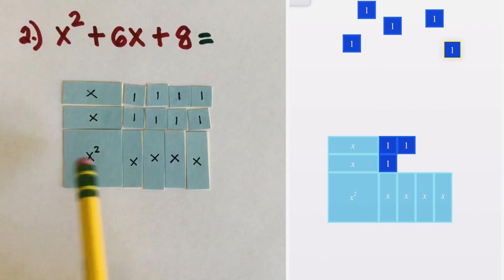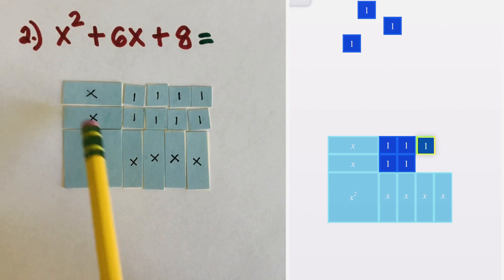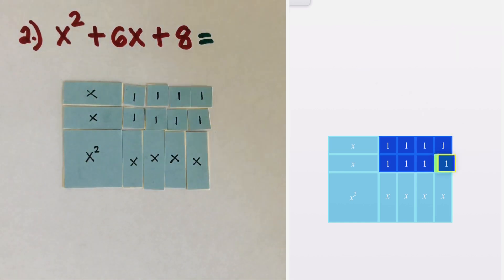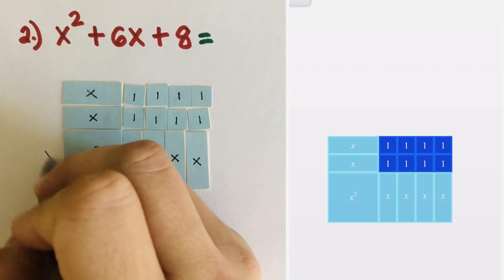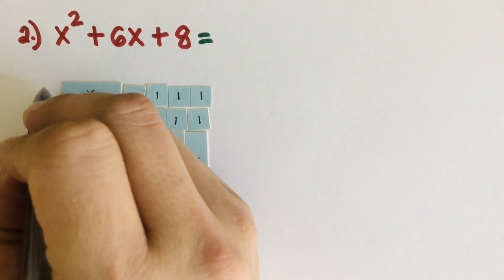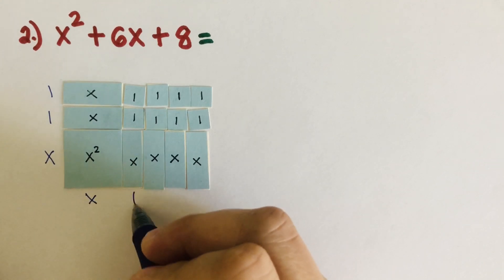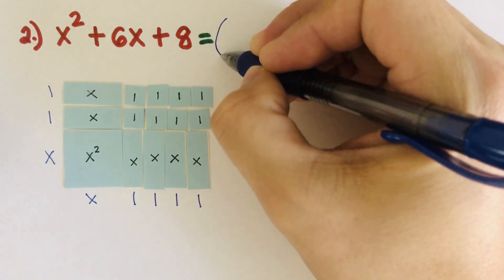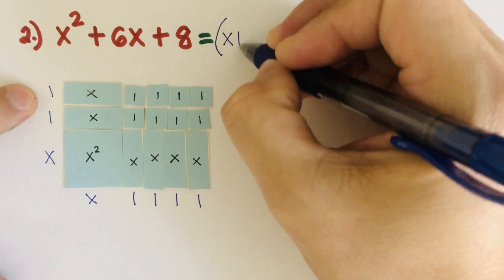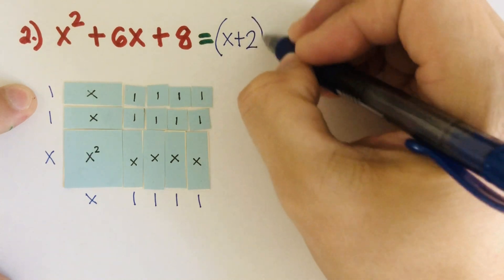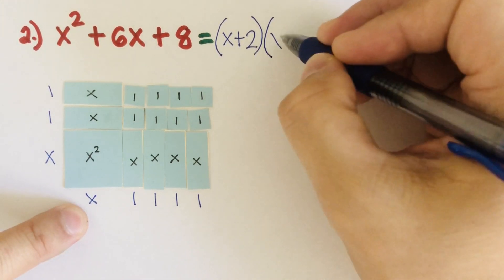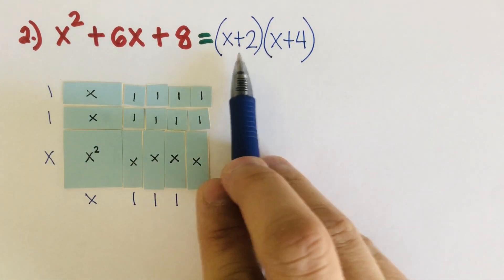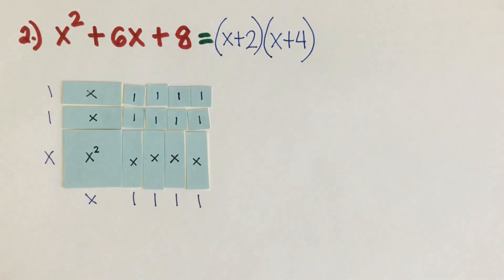This is the area as a sum: 1 x squared, 6 x's, and 8 ones. To get the area as a product, I label the sides. This side is x, then 1 and 1; the bottom is x, then 1, 1, 1, and 1. So the factored form is (x + 2)(x + 4). If you use the FOIL method, you should be able to come back to the general form.